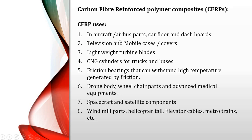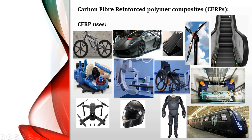Carbon fiber reinforced polymer composites are used in CNG cylinders for trucks and buses, lightweight turbine blades, television and mobile cases, Airbus parts, car floors, dashboards, drone bodies, wheelchair parts, spacecraft and satellite components, windmill parts, helicopter tails, elevator cables, and metro trains. The bicycle frame, car body, and train body can also be made from carbon FRPs.